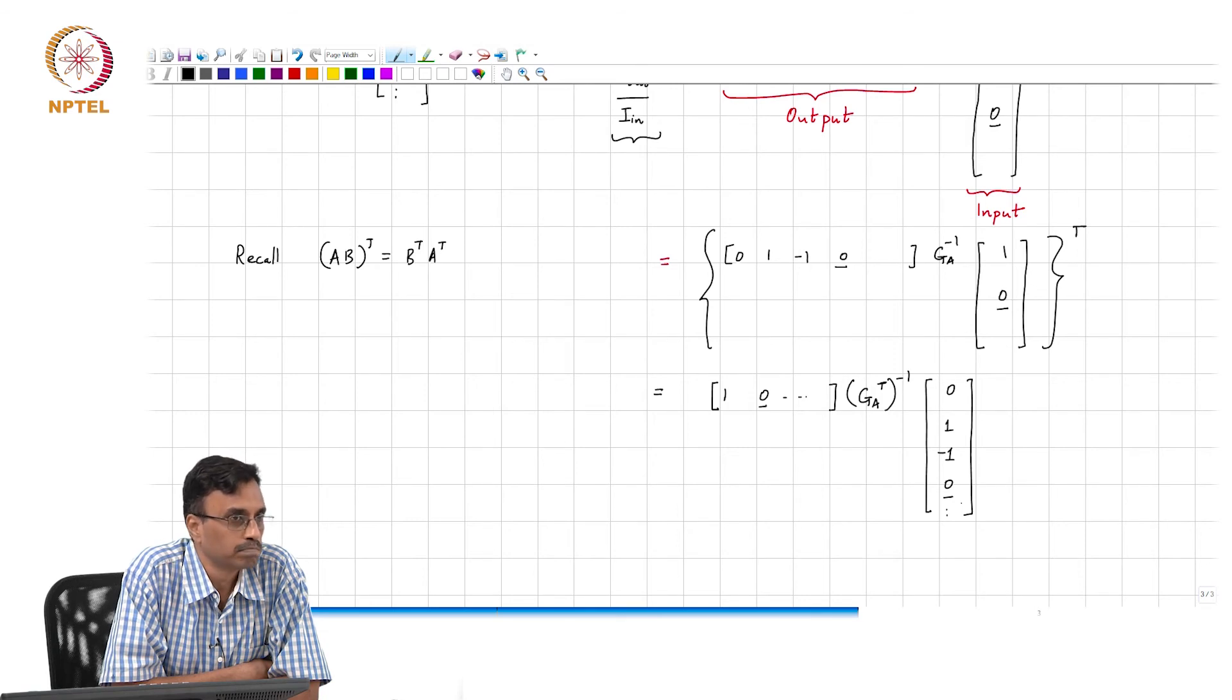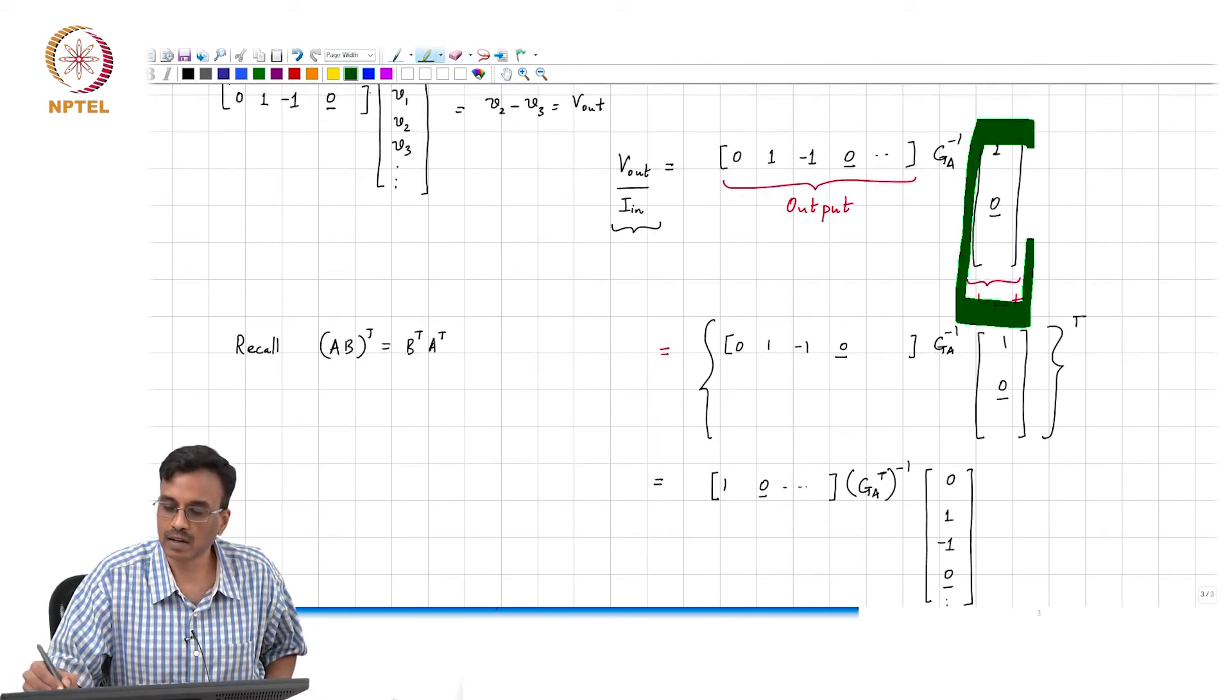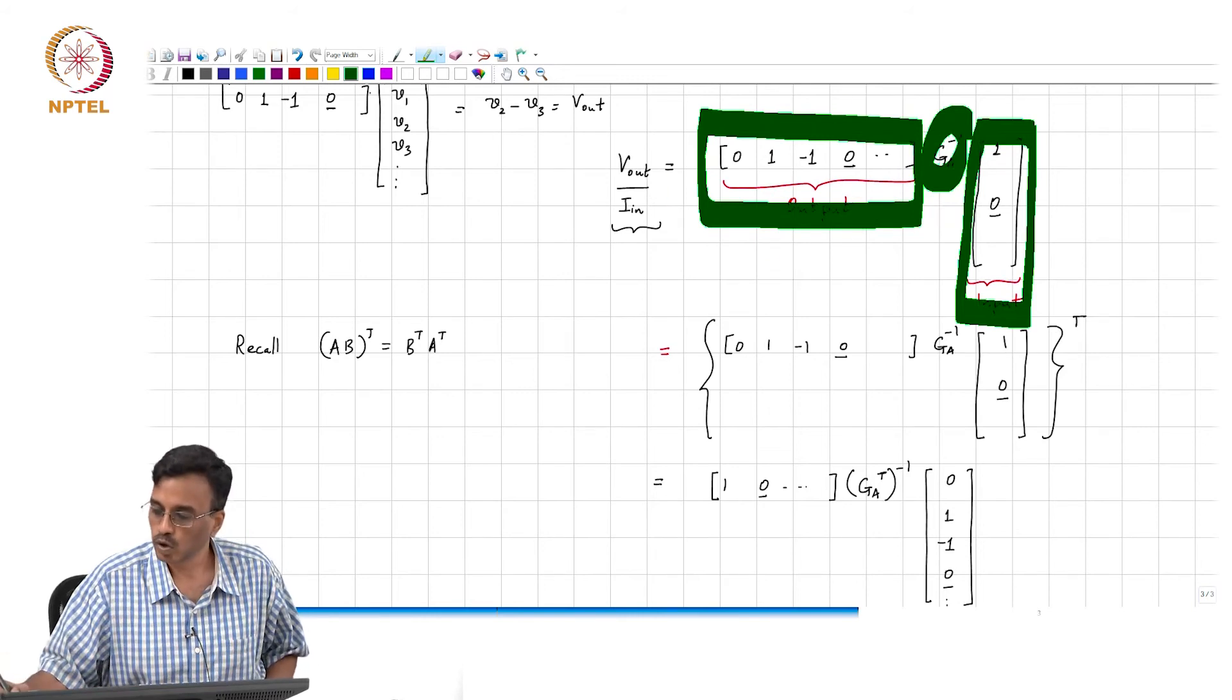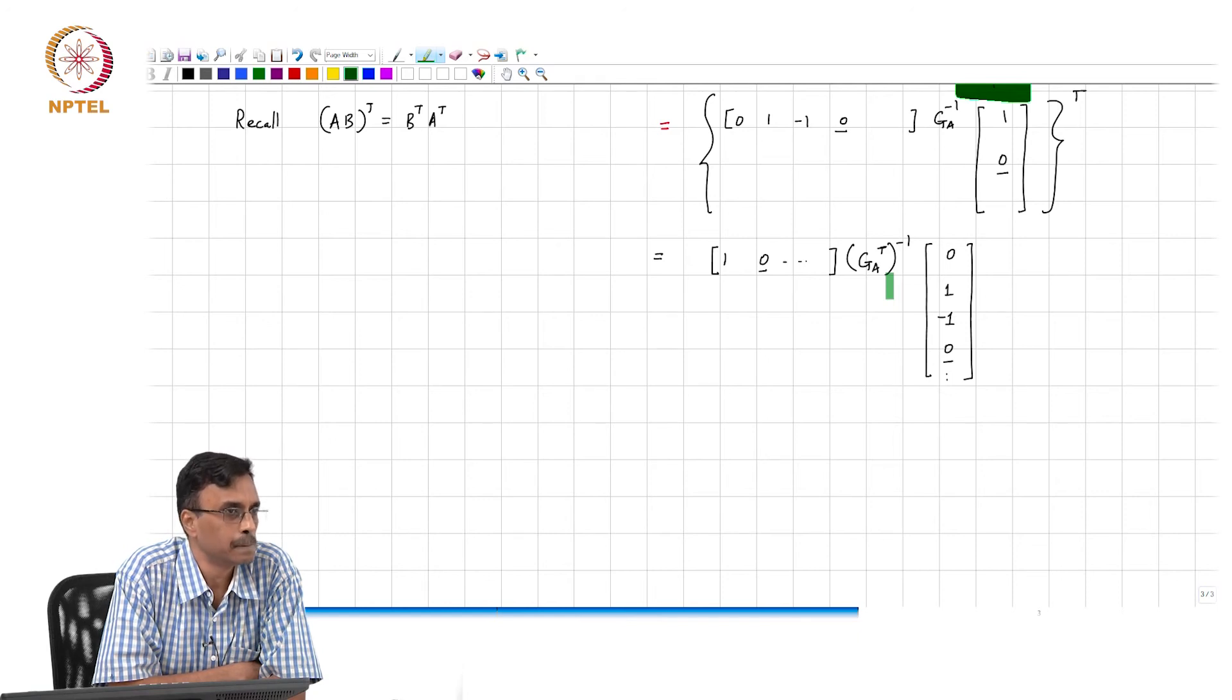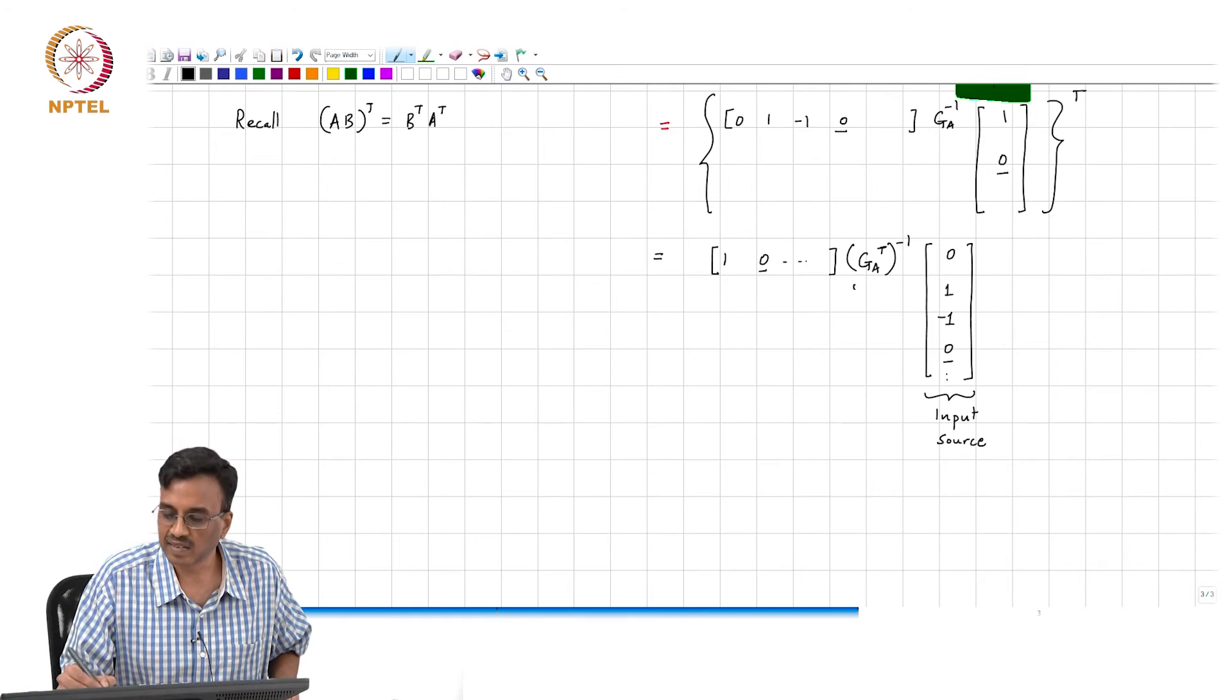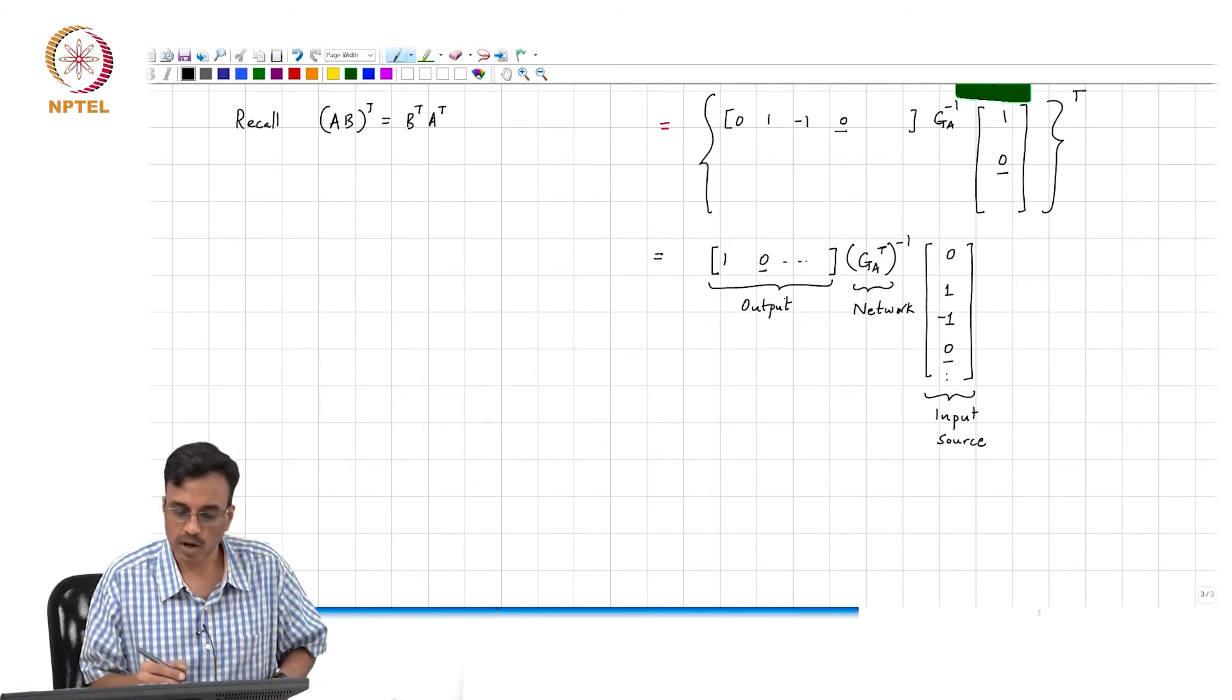Now how can I interpret this result? Remember, this column vector is the input and this goes through the circuit and results in some node voltage vector whose outputs you are measuring. Likewise, this can be thought of as: how can you interpret this expression? You can now think of this as the input source and this as the output measurement.